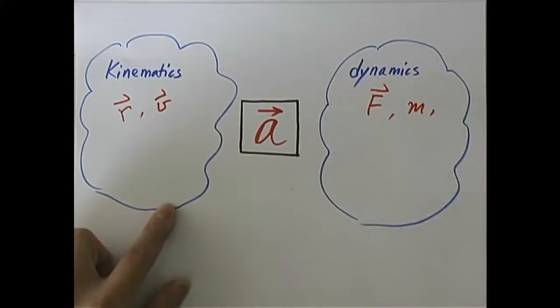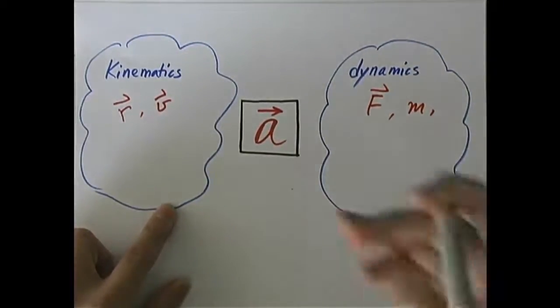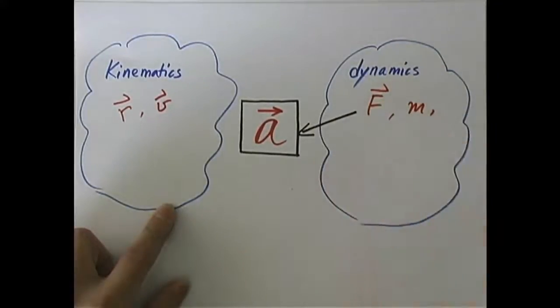From F, I can get A. Through what? Through F equals mA, Newton's second law.